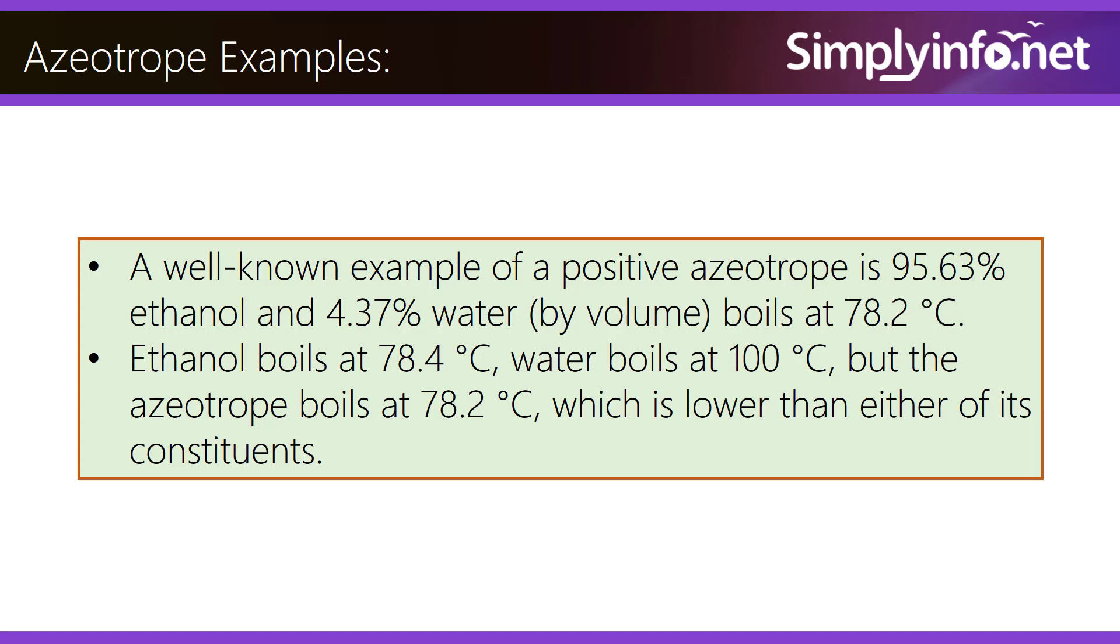Ethanol boils at 78.4 degrees Celsius and water at 100 degrees Celsius, but the azeotrope boils at 78.2 degrees Celsius, which is lower than either of its constituents.